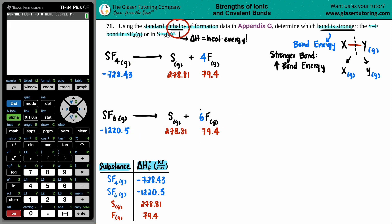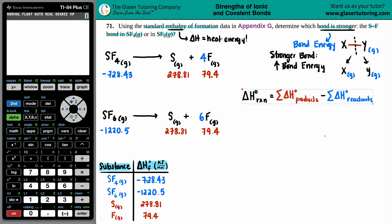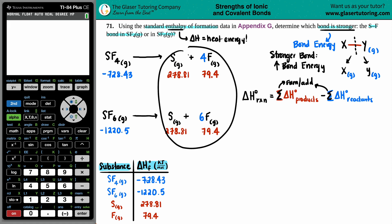We use Hess's Law: delta H for the reaction equals the sum of products minus the sum of reactants. The standard notation (delta H° rxn) means we're using standard values. Essentially it's products minus reactants, but we combine each side into one number first.